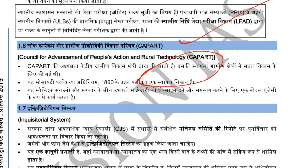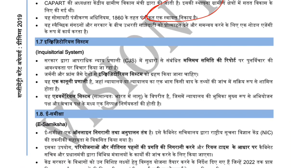Now we talk about the inquisitorial system. What is the inquisitorial system? The government is considering a committee report related to criminal justice system reforms. In countries like Germany and France, the inquisitorial system is followed. It is a legal system where the court or a member of the court is actively involved in investigating the facts of a case — this is different from the adversarial system.